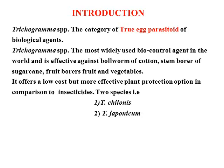Trichogramma is a potential parasitoid which is used in agriculture for many years. Trichogramma species is a category of true egg parasitoids, identified by previous scientists and workers in the field of biological control. Trichogramma species is the most widely used biocontrol agent in the world. It is effective against all bollworm complexes in cotton, sugarcane, and most lepidopteran pests. It offers low-cost control over pests with effective plant protection as a mature component of IPM.